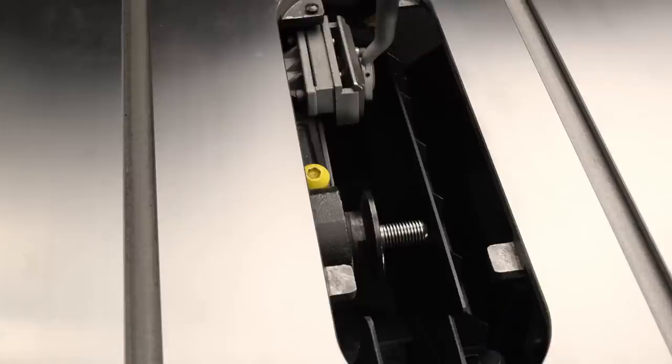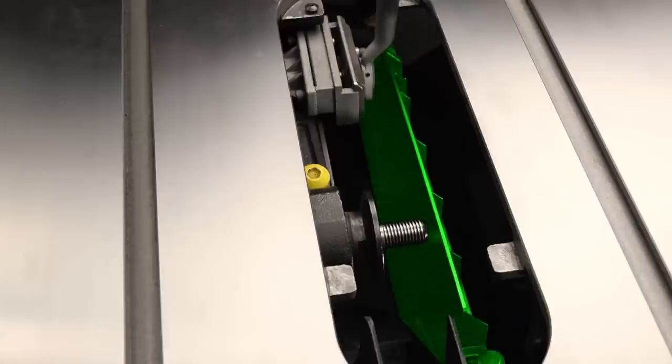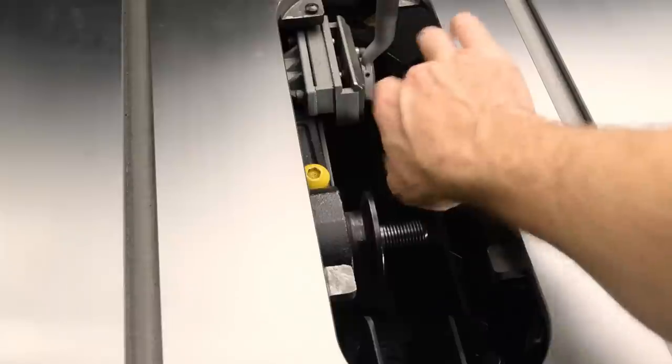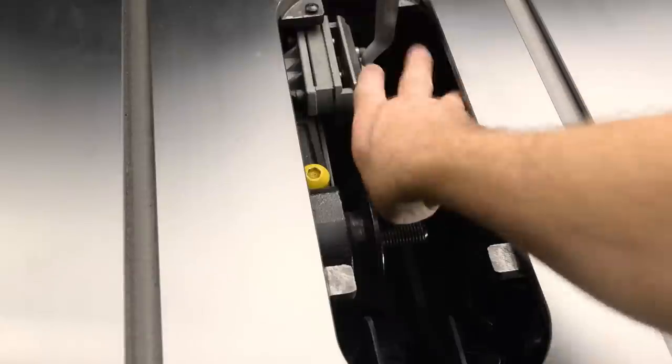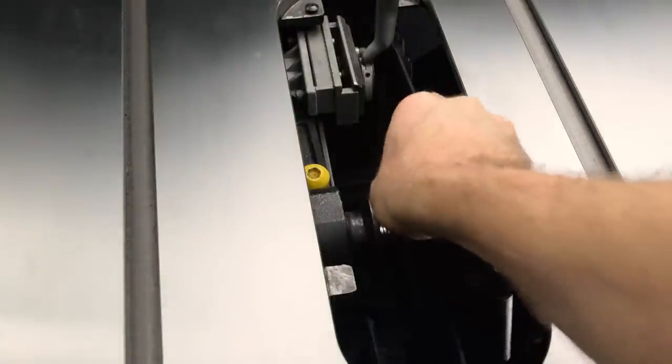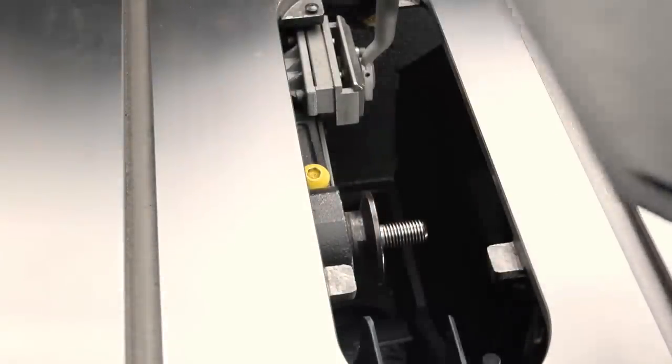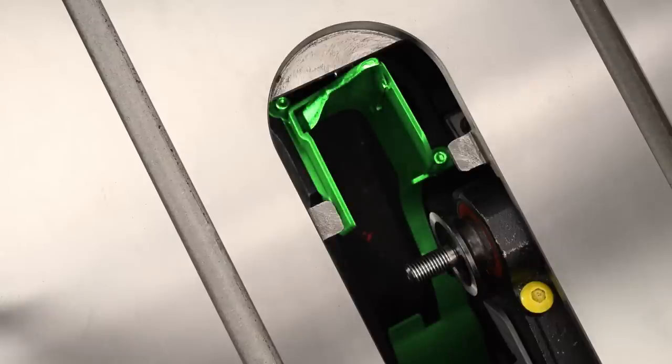If you need more room to work, continue with the following steps. Remove the dust shroud door. Pivot slightly and lift off the post. Next, remove the dust shroud.